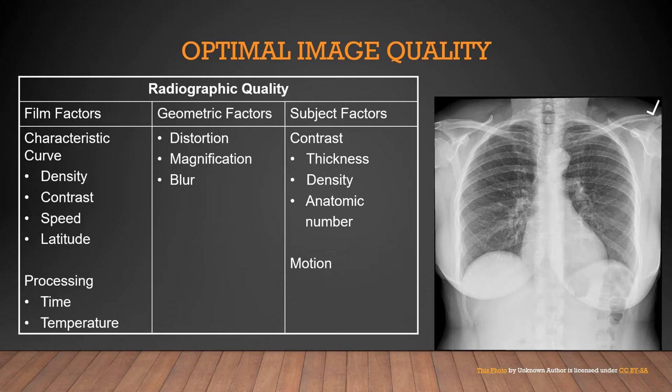We're also looking at processing - has this film processed for too long or was the temperature too high? We're looking at film characteristics and geometric factors: is there any distortion, magnification, and blur? And then the subject factors relate to contrast - is the patient too large? Am I able to penetrate all parts of the x-ray with the density? What is the atomic number of what I'm x-raying - am I x-raying barium, which is a high atomic number? And has the patient moved? So that's all part of radiographic quality.